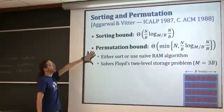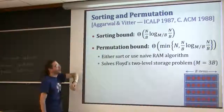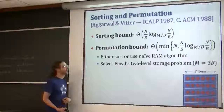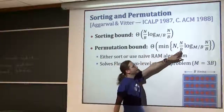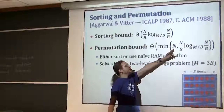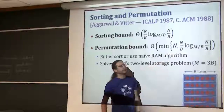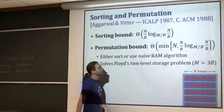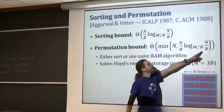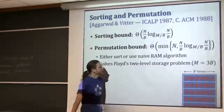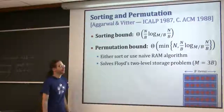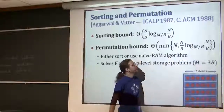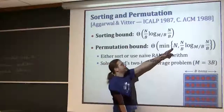Going back to Floyd's permutation problem - I know the permutation, I know where things are supposed to go, I just need to move them there physically. Then it's slightly different from sorting. You have the sorting bound, but in some cases just doing the naive thing is better - sometimes it's better to take every item and stick it where it belongs in completely random access. You could always do it in N memory transfers, and sometimes that is slightly better than the sorting bound because you don't have the log term.